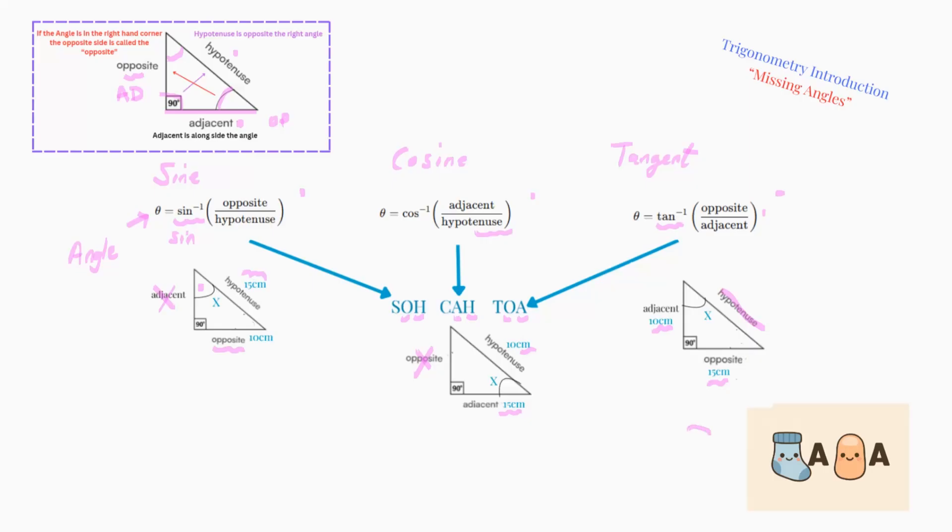And as you know, by looking at my other videos, I do use a silly mnemonic, which is SOHCAHTOA. That's how I remember it. SOHCAHTOA. So, SOH, opposite hypotenuse. CAH is cos, adjacent hypotenuse. And TOA is opposite adjacent.